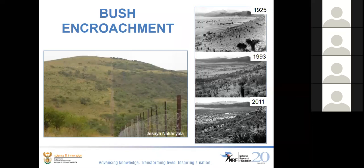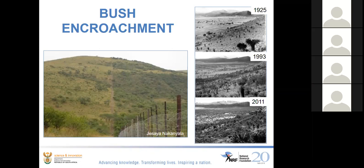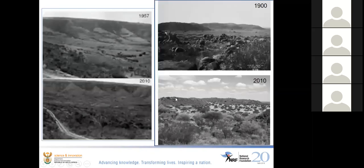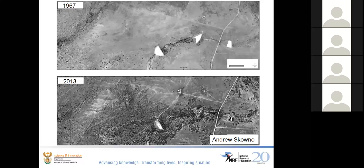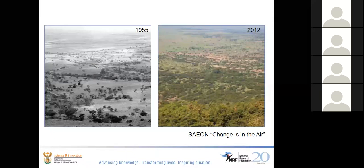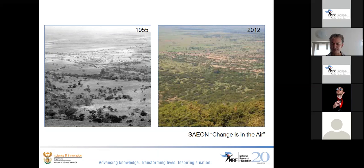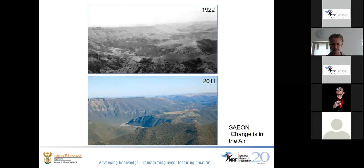Southern Africa is one of the main areas where bush encroachment has been reported and studied. Here are a few photos illustrating this — one in color from Namibia showing how land management can result in bush encroachment, and one from the Eastern Cape or Karoo showing a similar phenomenon over time. It's a slow process, but it has happened across large areas. There was a change in the SAEON booklet produced a couple of years ago with William Bond as lead, which nicely explained this phenomenon.